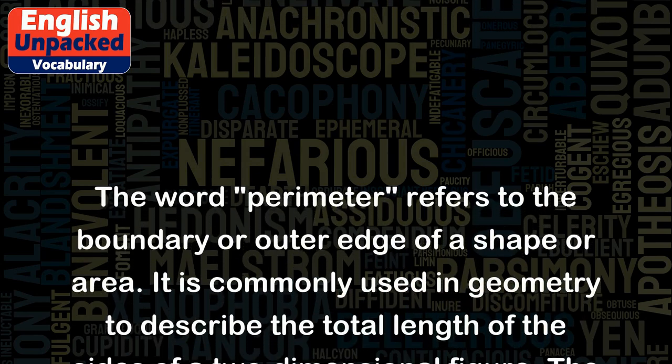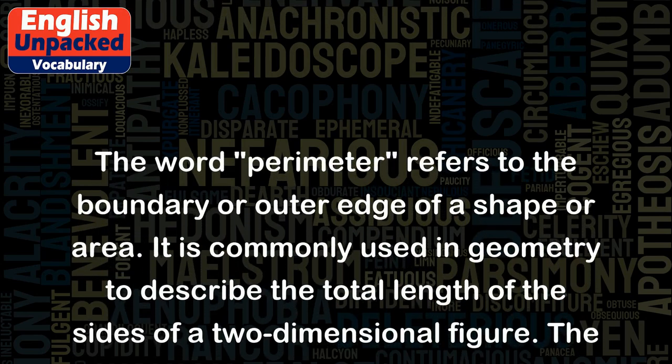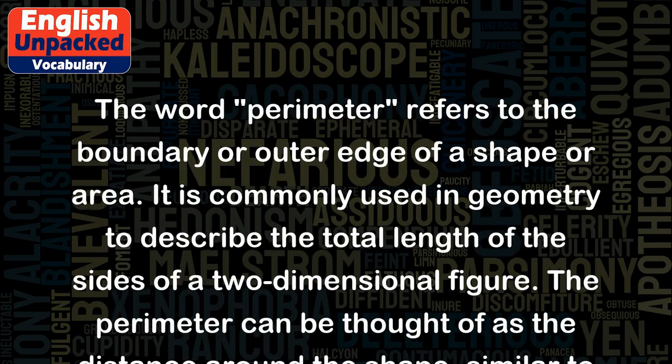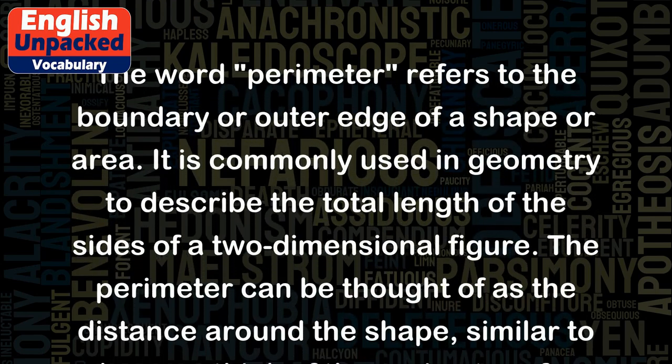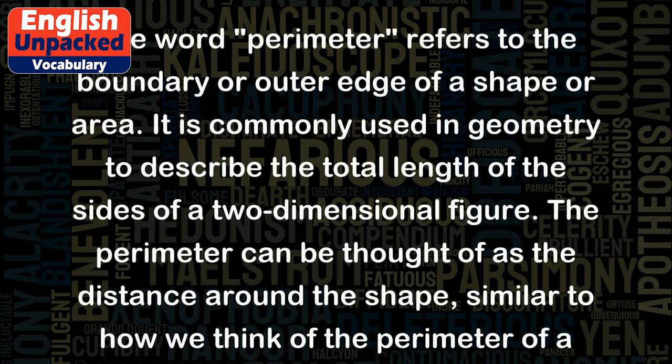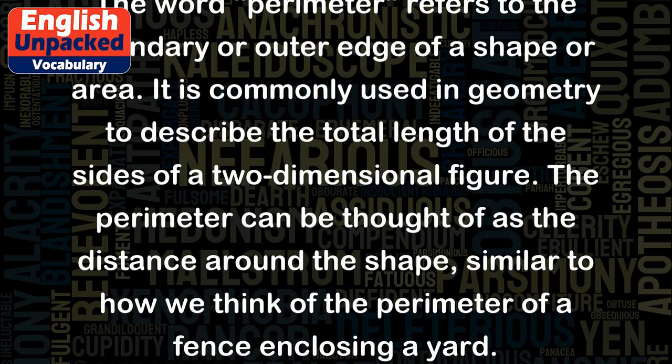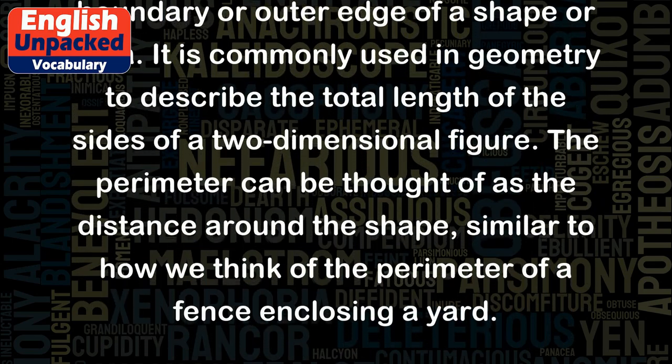It is commonly used in geometry to describe the total length of the sides of a two-dimensional figure. The perimeter can be thought of as the distance around the shape, similar to how we think of the perimeter of a fence enclosing a yard.